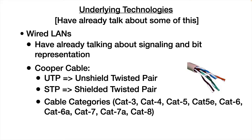We have cable categories. Cat 3 was really old, but it was the first one used for Ethernet — originally designed for telephone. Within these categories there are specifications about how many twists there have to be, what frequency they can operate at, and that type of thing. There's been a progression from Cat 3 to Cat 4 to Cat 5e, 6, etc., as shown here.